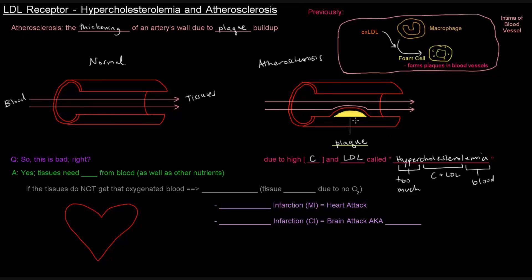These plaques build up because of oxidized LDL being consumed by macrophages to form foam cells. And these foam cells build up in the wall of the artery to get this plaque here. That's something we talked about previously.